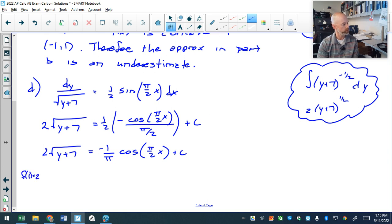and now I need to use my initial condition f of 1 equals 2 to solve for c. f of 1 equals 2 will lead to 2 times the square root of 9, which is 3 equals, and the cosine, oh this is sexy, the cosine of pi over 2 is 0, so that's just going to be c. So c is 6, and then I can take that over here, plug my 6 back in,